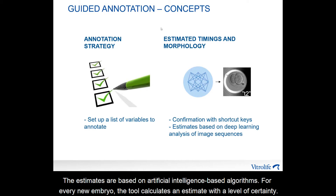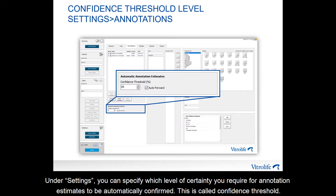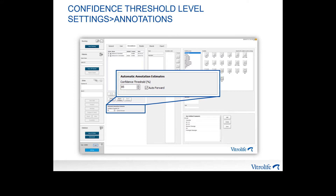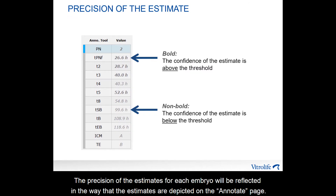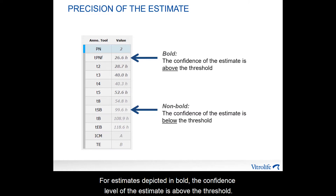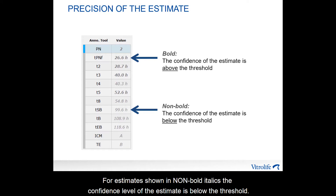The estimates are based on artificial intelligence-based algorithms. For every new EmbraView, the tool calculates an estimate with a level of certainty. Under settings, you can specify which level of certainty you require for annotation estimates to be automatically confirmed. This is called the confident threshold. The precision of the estimates for each EmbraView will be reflected in the way that the estimates are depicted on the annotate page. For estimates depicted in bold, the confidence level is above the threshold. For estimates shown in non-bold italic, the confidence level is below the threshold.